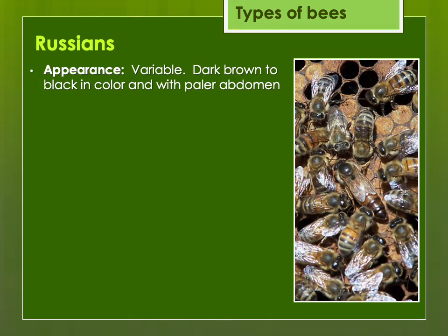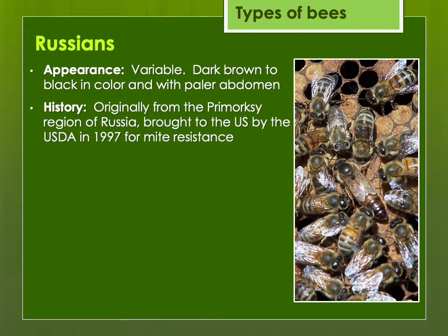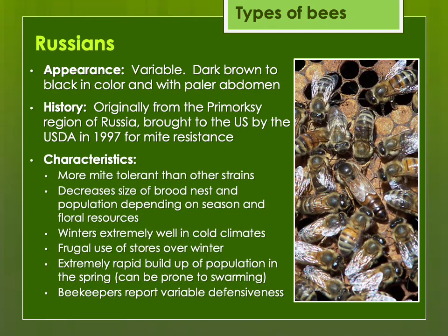The Russian bees are more variable. They were originally transported across Russia to eastern Russia in the Primorsky region, and they were the first European honeybees to be exposed to varroa mites. Because they had been exposed to varroa for much longer than other European honeybees, they've evolved traits that allow them to be more resistant. They're sensitive to changes in floral resources, similar to Carniolans and Caucasians, and will shut down brood rearing fairly quickly, but they do winter very well in northern climates. They build up very rapidly in spring, so if you're not managing that, they can be prone to swarming. Some beekeepers say they can be more defensive, but I find they're not very defensive — though if you cross them with an unrelated strain, that first cross can sometimes be more defensive than a purebred Russian.